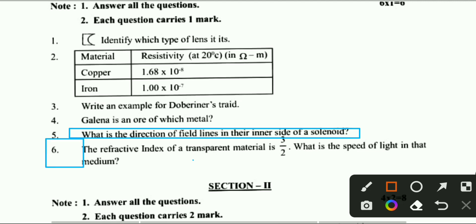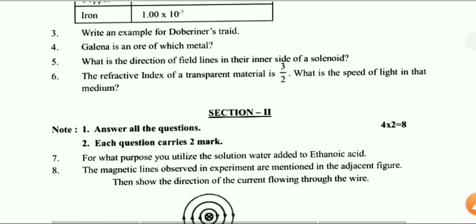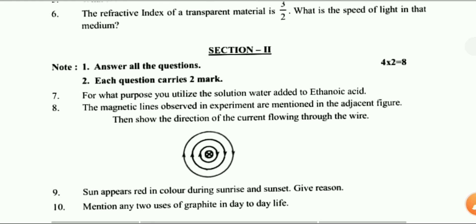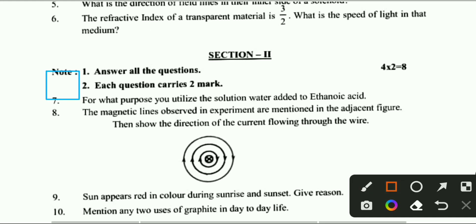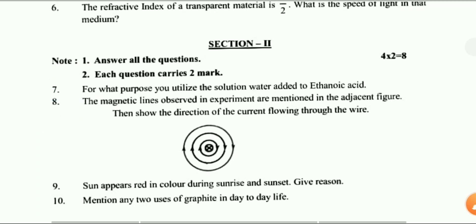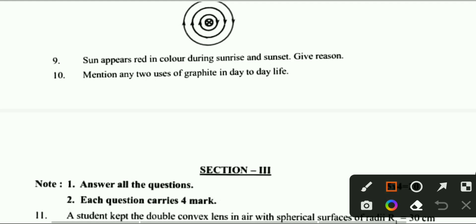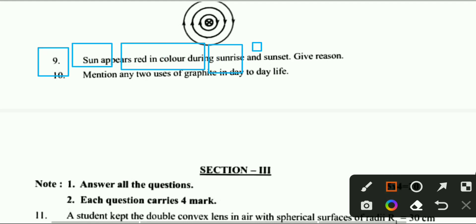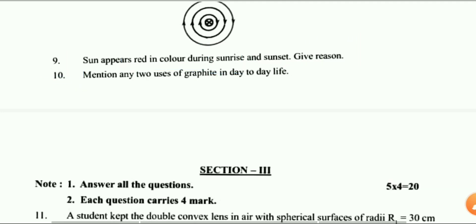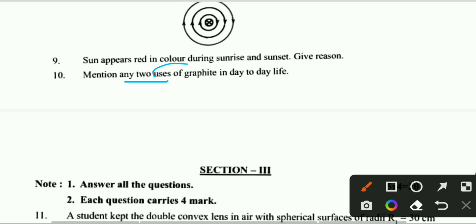You can see Section 2, which carries 8 marks. Questions 7 and 8 are there — all questions are very important for your exam. Question 9 asks: the sun appears red in color during sunrise and sunset — give reason. Question 10 asks: mention any two uses of graphite in day-to-day life.